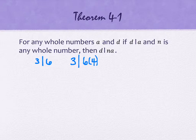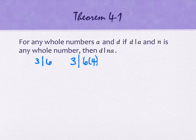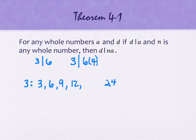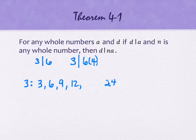Another way to think about it: if six is in the multiplication list of the threes, then anything I multiply by will also be in that list. For instance, in the multiplication tables of threes — three, six, nine, twelve — I'll eventually get to 24, which is six times four. So, any number that's a multiple of my multiple will also be divisible by that same divisor.